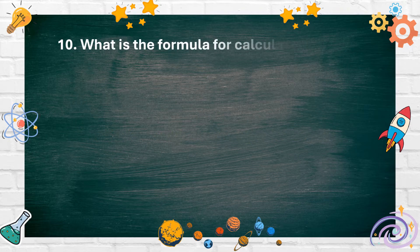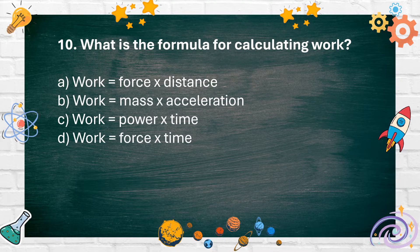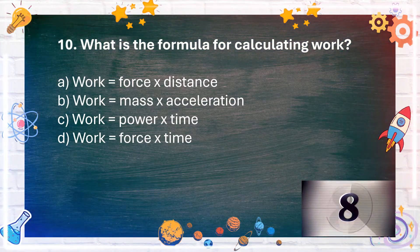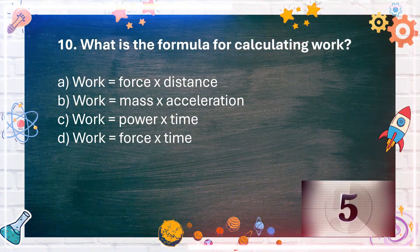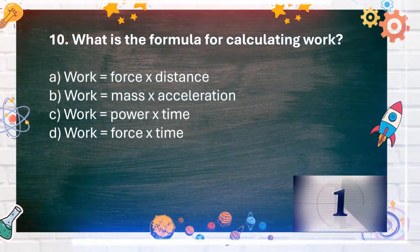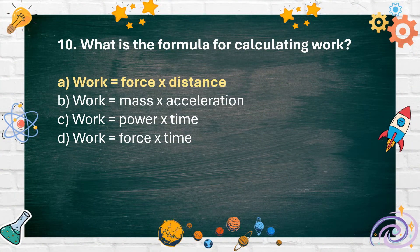Number 10: What is the formula for calculating work? A. Work equals force times distance. B. Work equals mass times acceleration. C. Work equals power times time. D. Work equals force times time. The answer is A. Work equals force times distance.